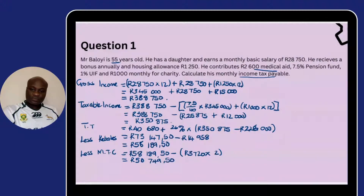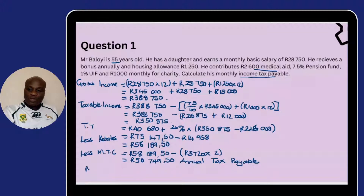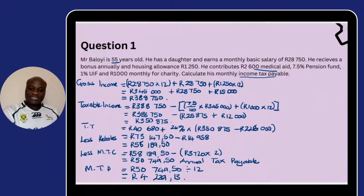This is our annual tax payable. But remember, the question asked for monthly tax payable. To get the monthly tax payable, we take the annual figure of R50,749.50 and divide it by 12. Our monthly income tax is therefore R4,229.13.